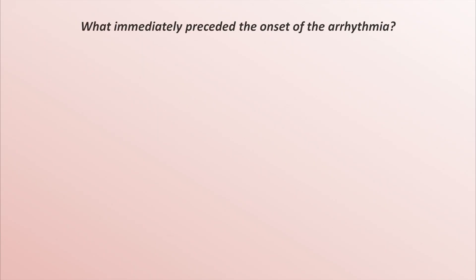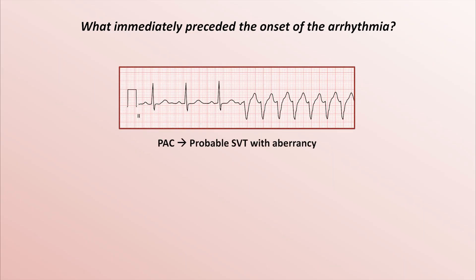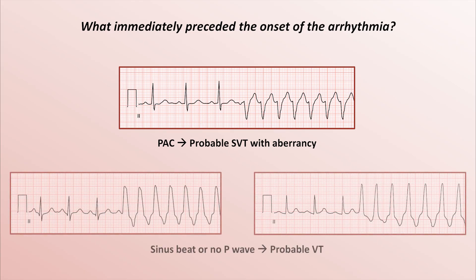Another consideration is to identify what immediately preceded the onset of the arrhythmia. If the arrhythmia seemed to be triggered by a premature atrial contraction, it's probable SVT with aberrancy. If it was preceded by what appears to be a sinus P wave or no P wave at all, that's probably VT.